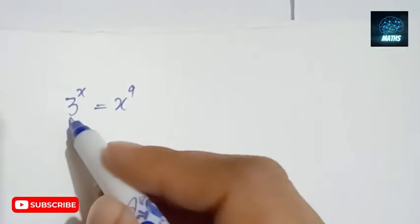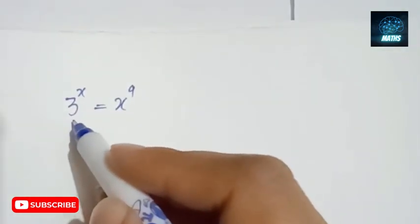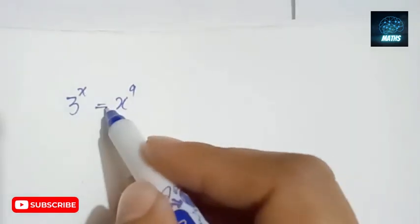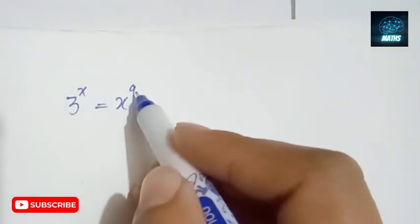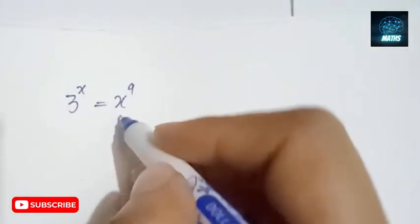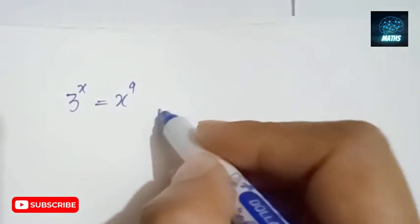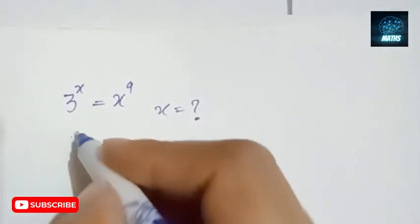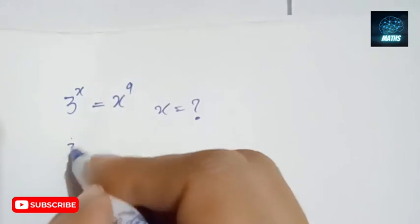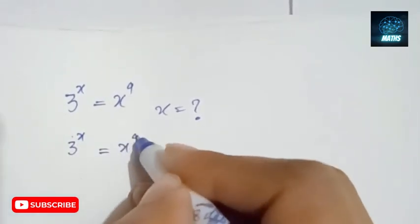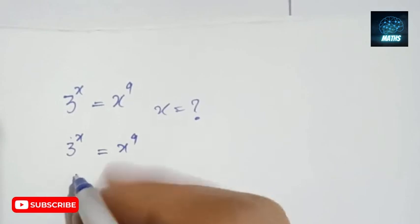Hi everyone. In this video we have a very nice exponential equation: 3 to the power x equals x to the power 9. What we have to find is the value of x. So let's simplify this — 3 to the power x is equal to x to the power 9.